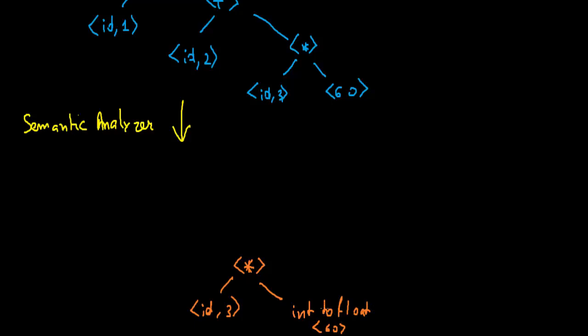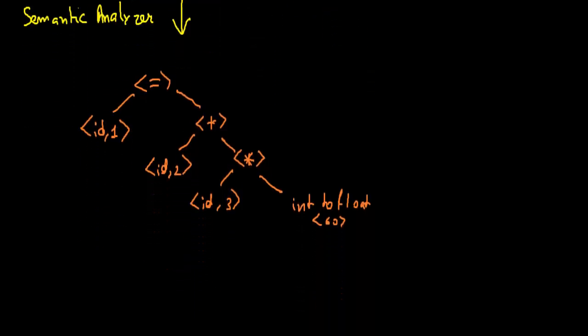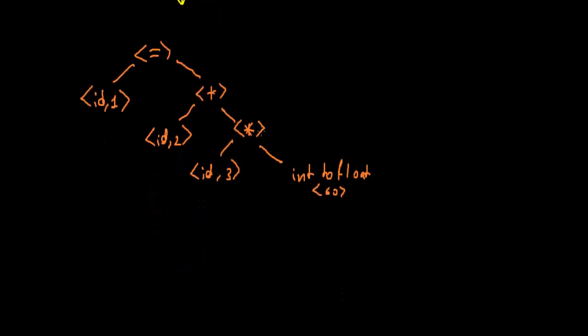We can write ID like 60 and it will go to the plus, again ID 2, now it will go to equals and ID 1. Now after going to the semantic analyzer, it will go to intermediate code generation.